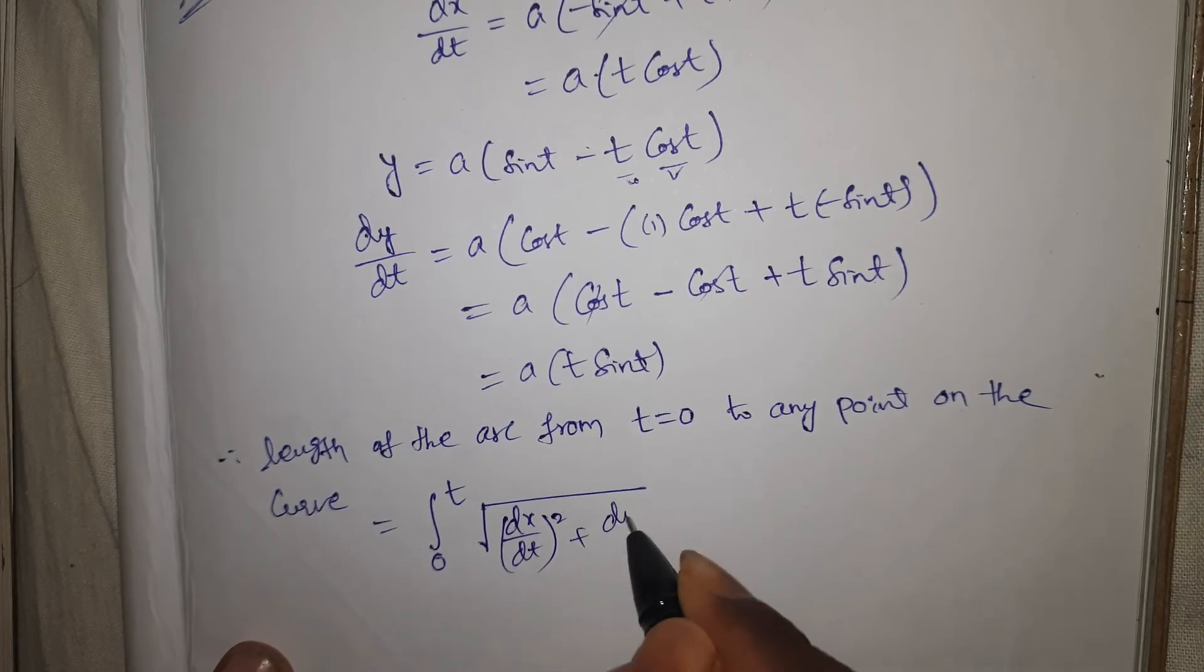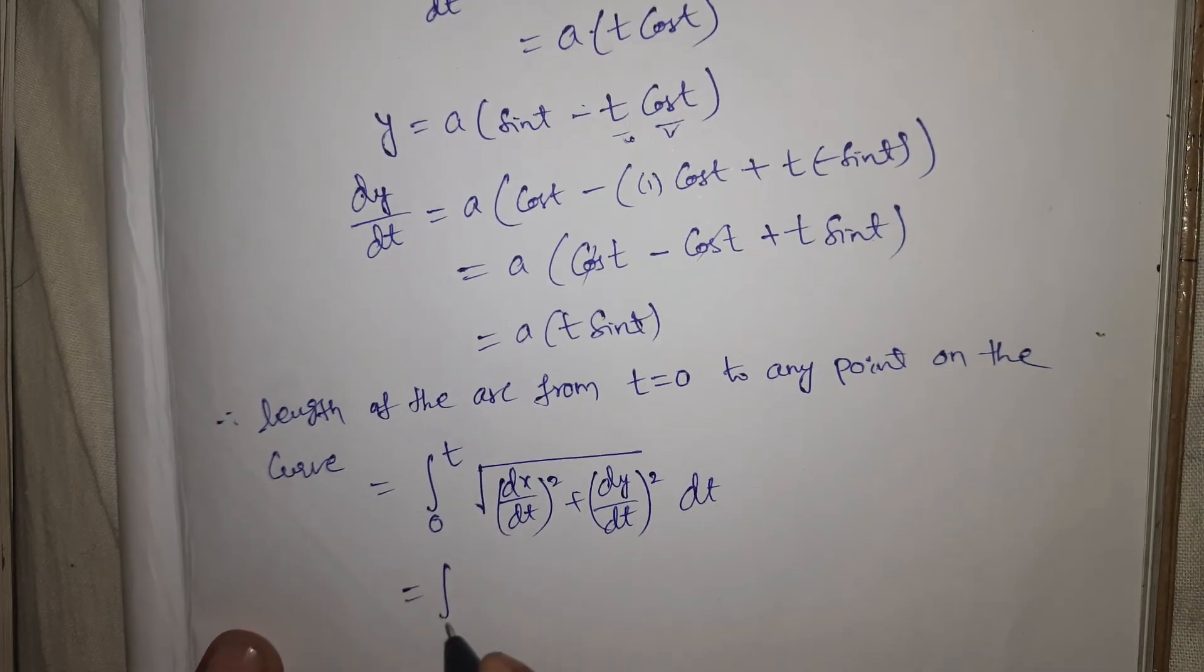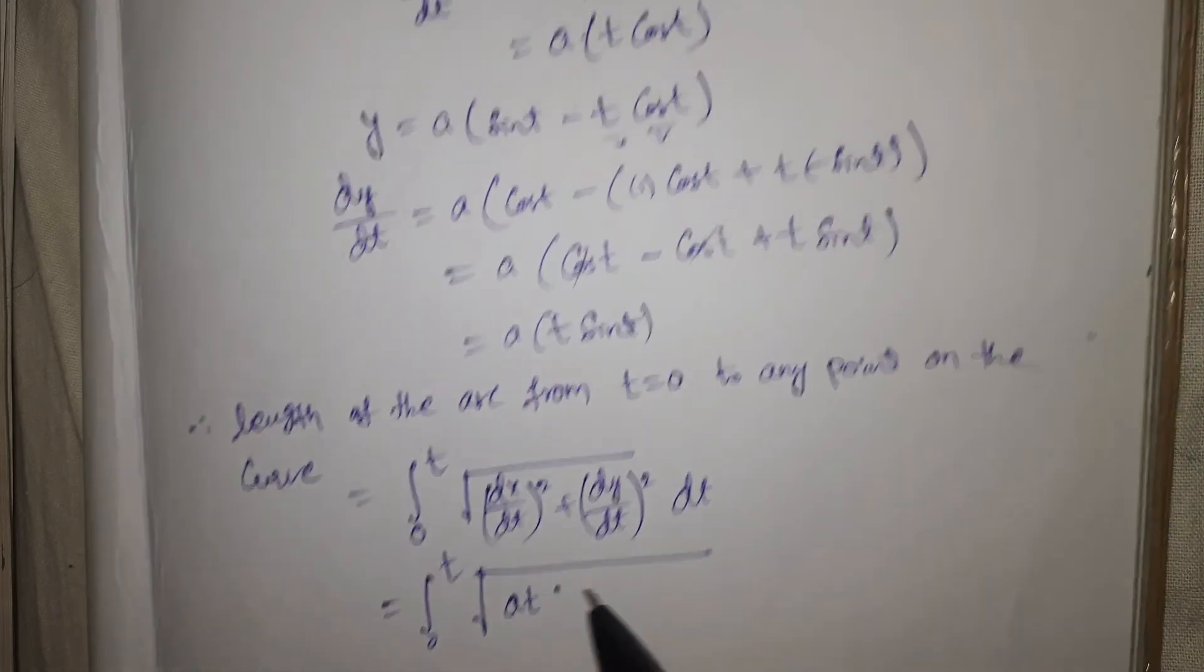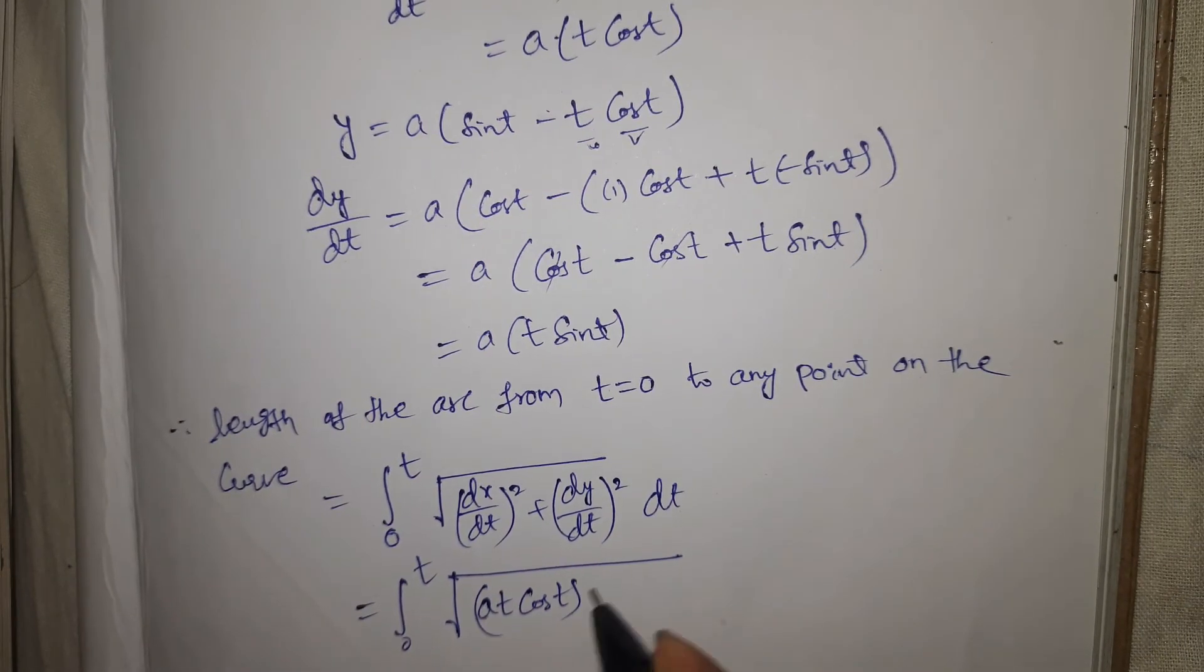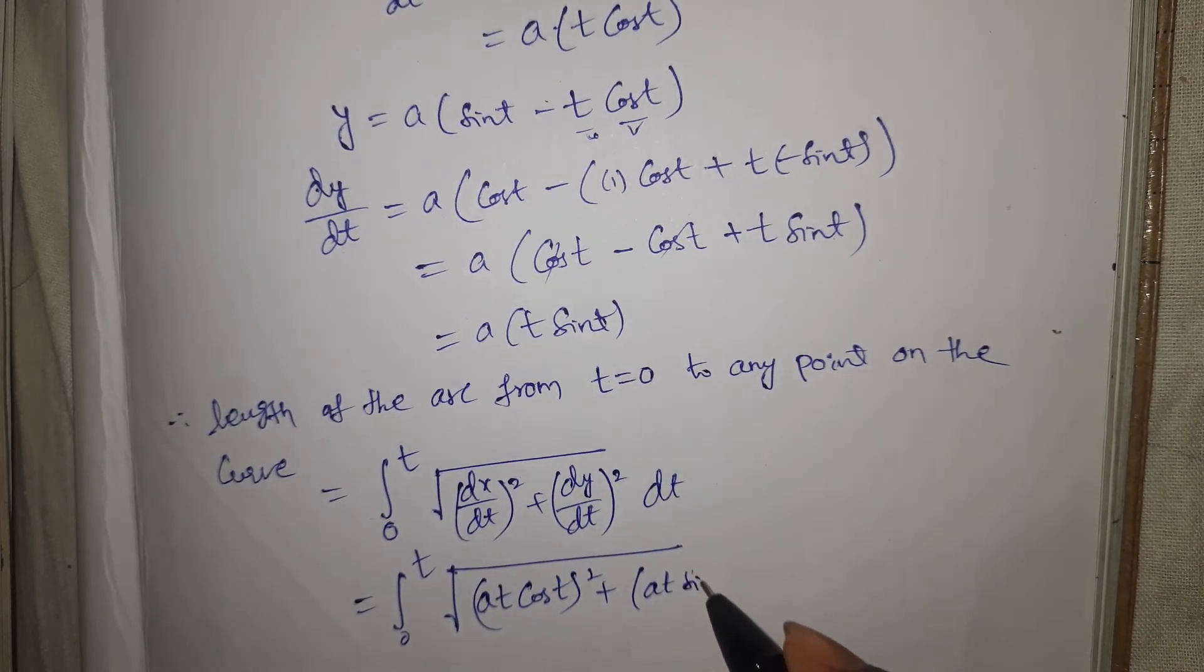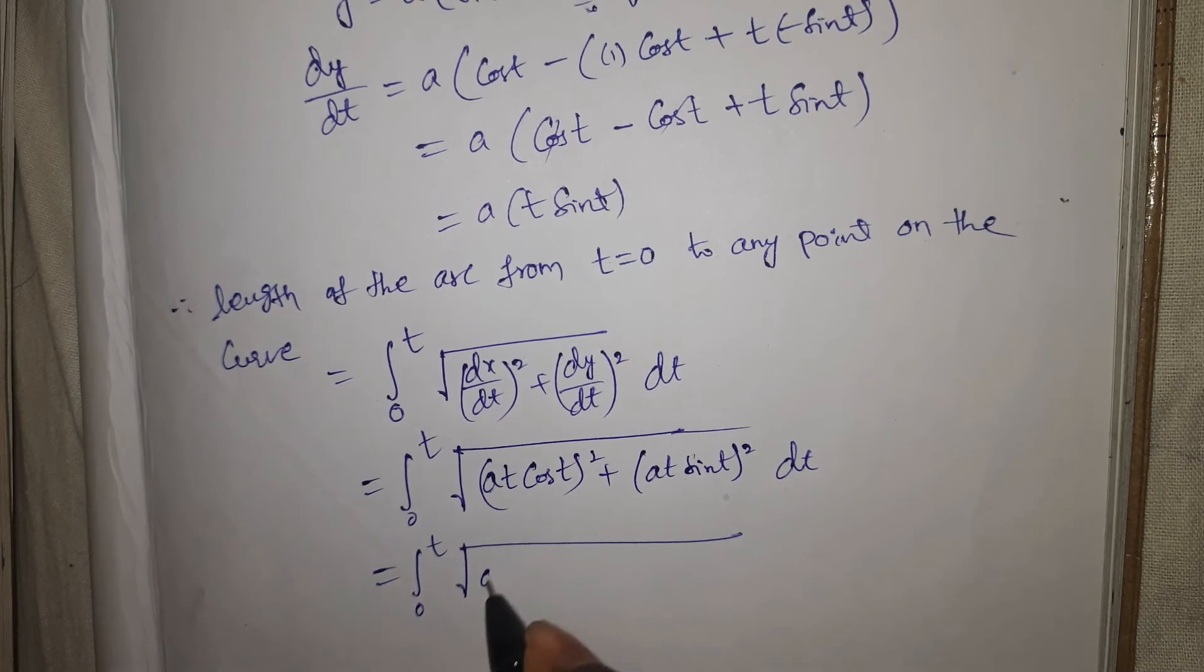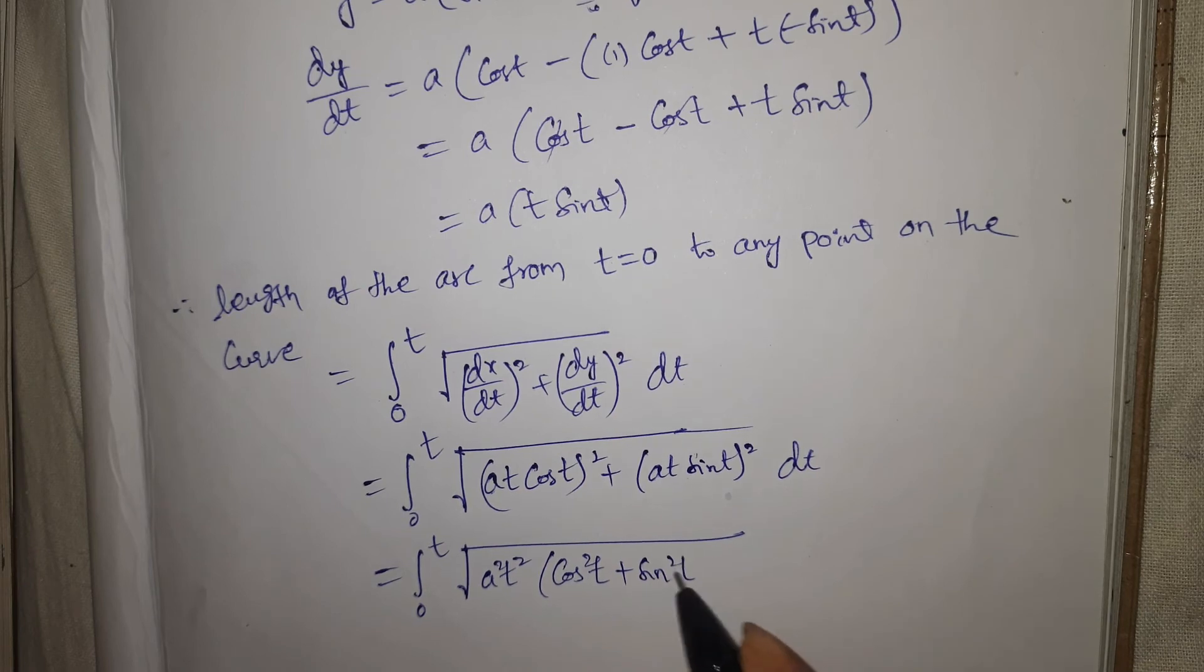Integral from 0 to t of √[(dx/dt)² + (dy/dt)²] dt = integral from 0 to t of √[a²(t² cos² t + t² sin² t)] dt. Taking t² common here: cos² t + sin² t, this value is 1.